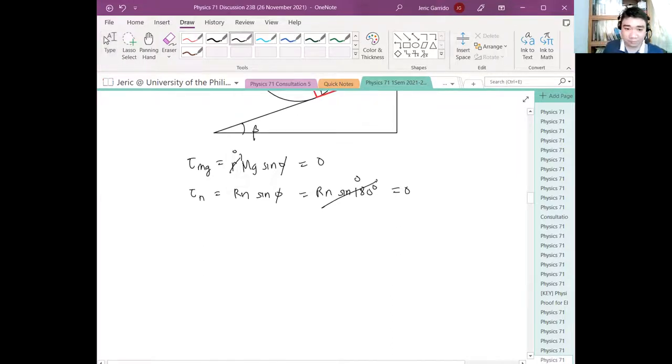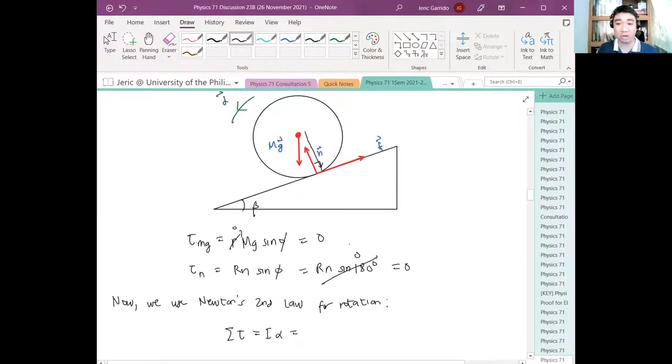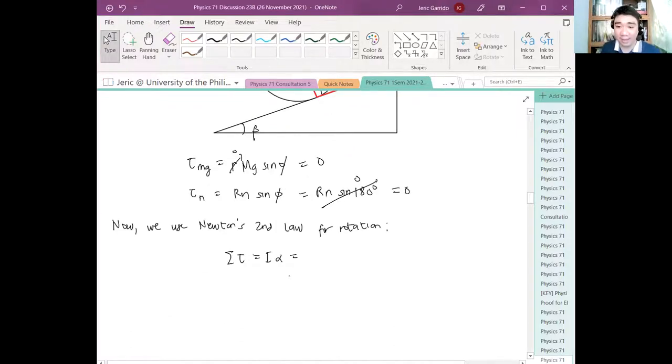Now going back, we use Newton's second law for rotation. That is, the summation of torques is just I alpha which equals what? Again, the only force that creates a torque is the frictional force. So this is R cross F out of the paper. What's the angle between them? 90 degrees because it's a ball, the force is tangential. And therefore I have RF here. This is equation 1.